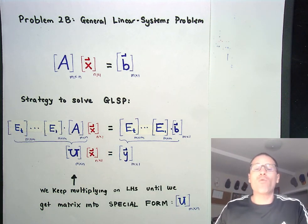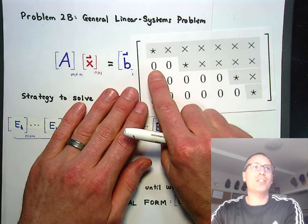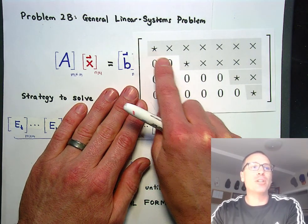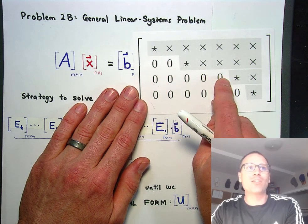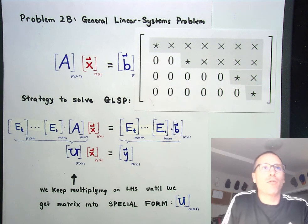We saw that row echelon form had this really special structure called the stair step structure where all zeros were on the bottom and then leading entries went to the right as we moved down in rows. We are next going to talk about reduced row echelon form.